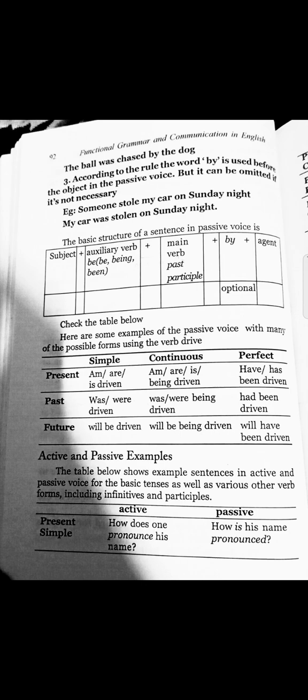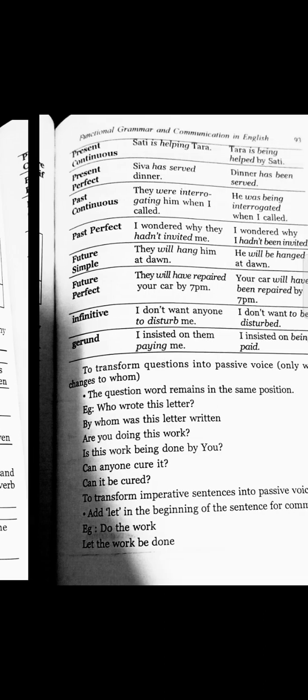First example — present simple. Active: 'How does one pronounce his name?' Passive: 'How is his name pronounced?' Here 'his name' is the object in active voice and becomes the subject in the passive.